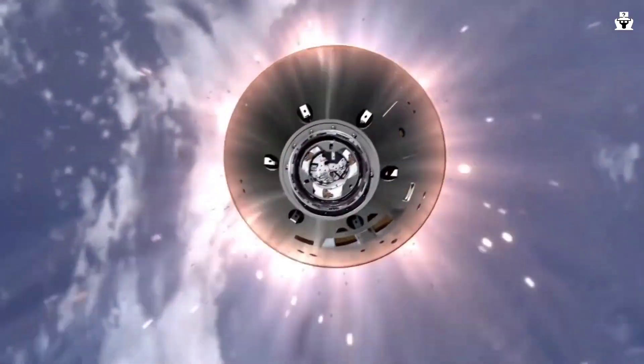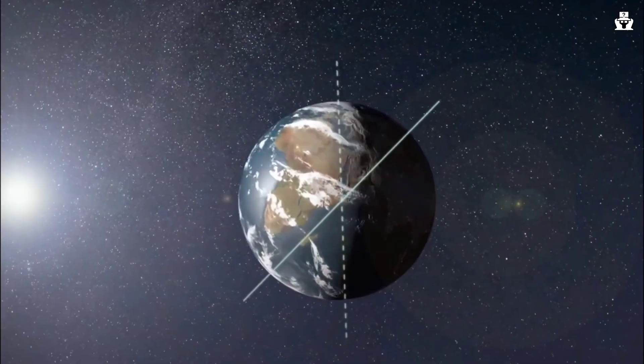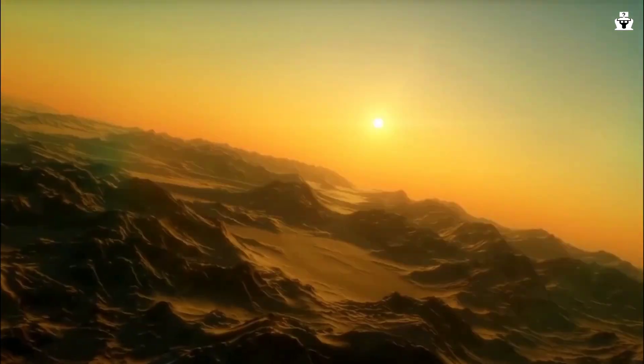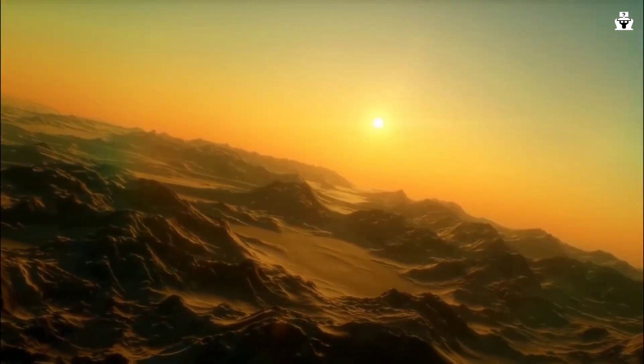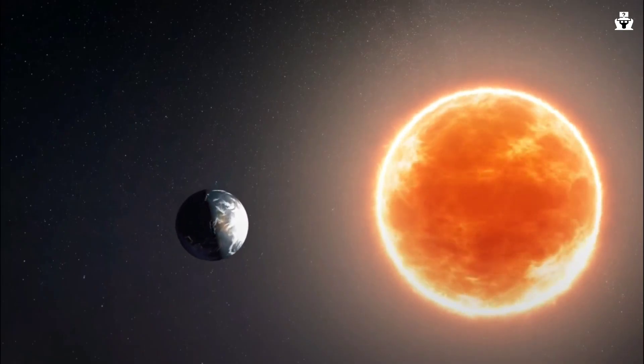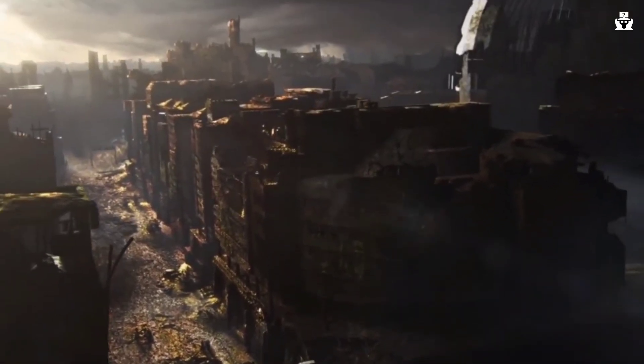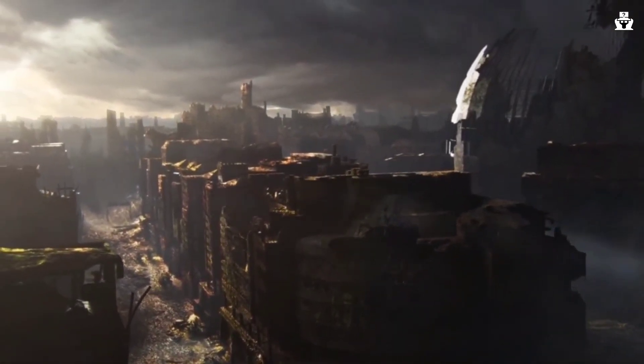So, what have we learned? If the earth stopped rotating, the consequences would be catastrophic. Climate, weather, gravity, tides, and life on earth would all be affected in significant and potentially irreversible ways. While the scenario may seem far fetched, it's a reminder of just how fragile and interconnected our planet's systems really are.